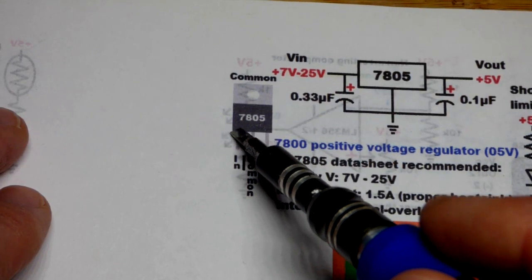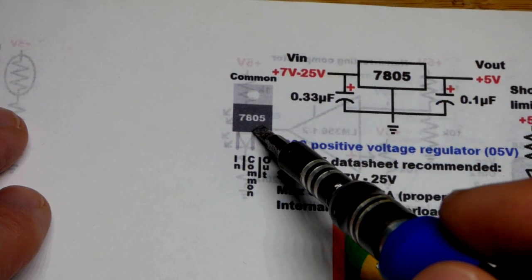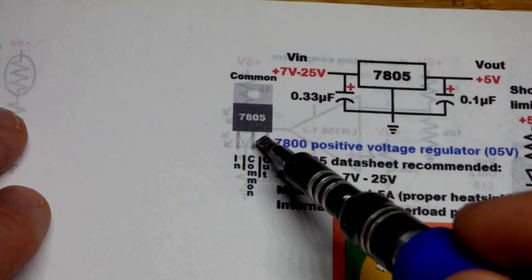Pin layout right there - left pin is input, middle pin is common, as is the tab which is on the back. That's a metal tab that you can attach a heat sink to.